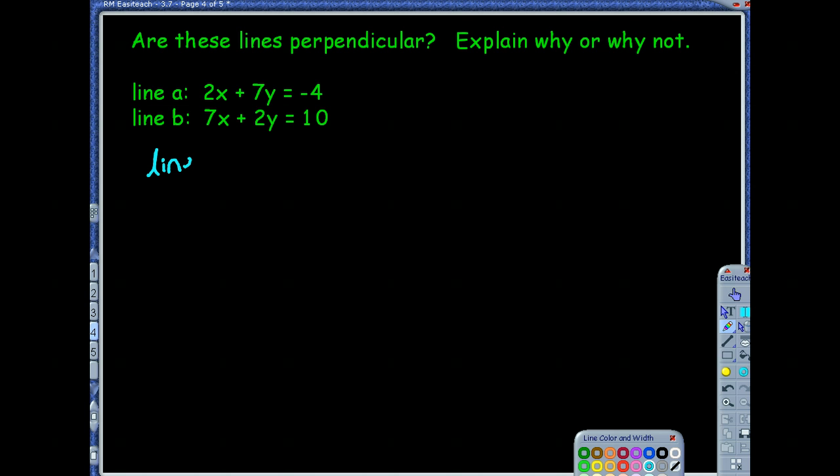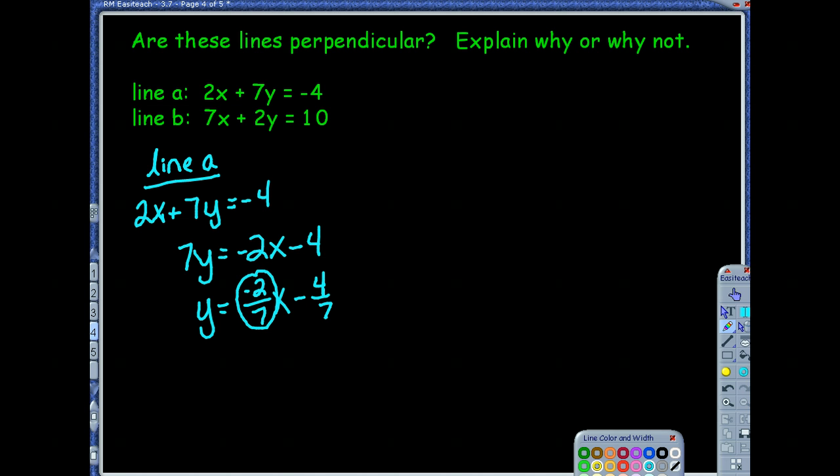So I'm going to start off with line A. We know that that equation was 2x plus 7y equals negative 4. So if I wanted to get that to slope intercept form, I would subtract 2x first on both sides. So it would be 7y equals negative 2x minus 4. And then I'm going to divide everything by 7. So I have y equals negative 2 sevenths x minus 4 sevenths. And we've got some fractions, but really all we really need in that equation is that slope, so that negative 2 sevenths is really all that we're going to worry about.